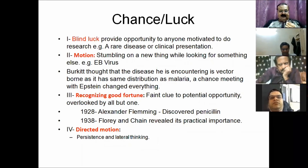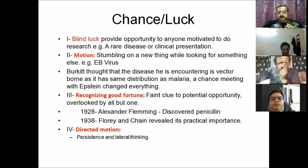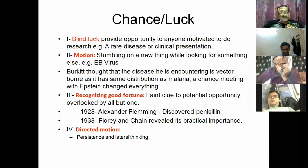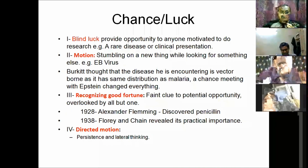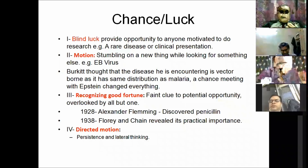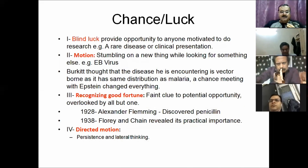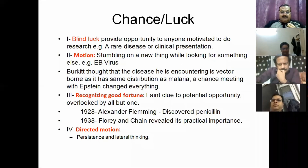The third type of luck is recognizing good fortune. Fleming discovered penicillin, but it was Florey and Chain who found out its importance — that it kills bacteria. That is a class-three chance: what Fleming could not discover, Chain did. The fourth type, which most of us do, is persistent and lateral thinking — keep doing research, thinking out of the box — called directed motion.